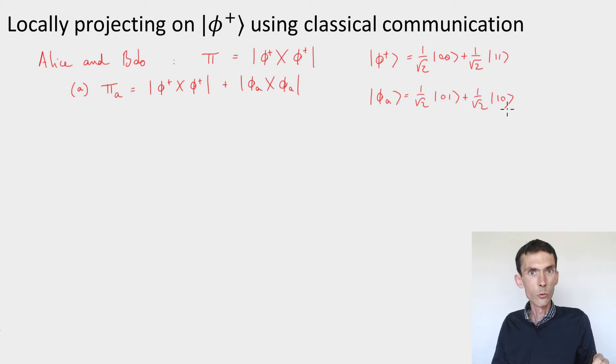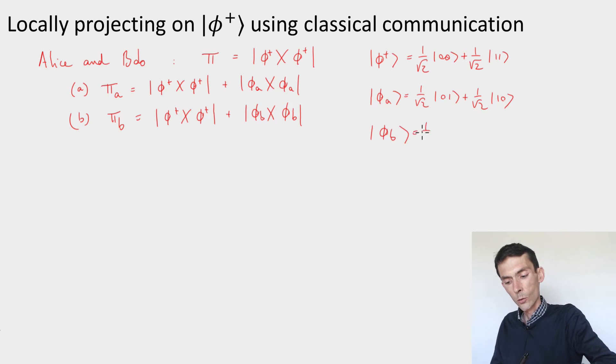0⟩. And the projection π_B, which projects on |φ⁺⟩ and |φ_B⟩, where |φ_B⟩ is the state 1/√2 |0,0⟩ minus 1/√2 |1,1⟩.